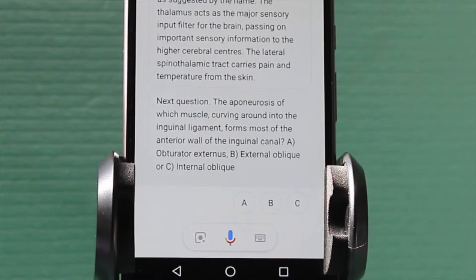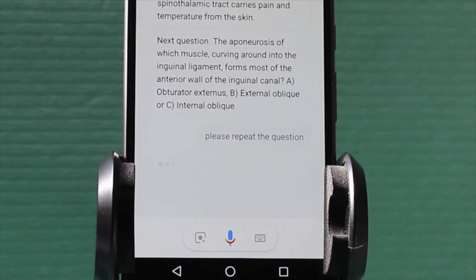Next question. The aponeurosis of which muscle, curving around into the inguinal ligament, forms most of the anterior wall of the inguinal canal? A) Obturator externus, B) External oblique, or C) Internal oblique. Please repeat the question.